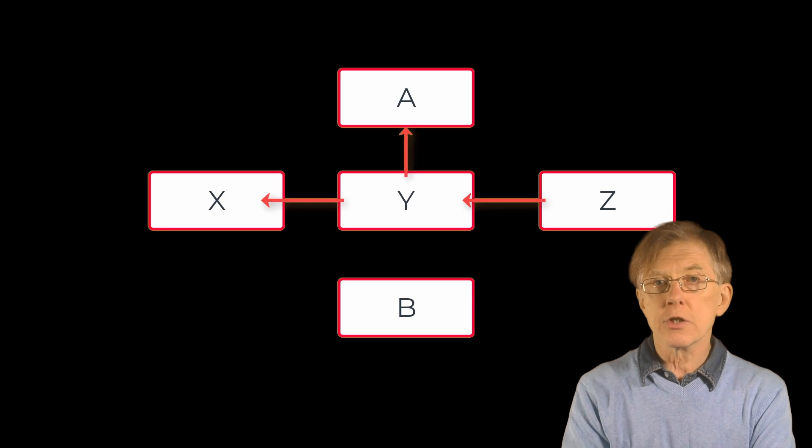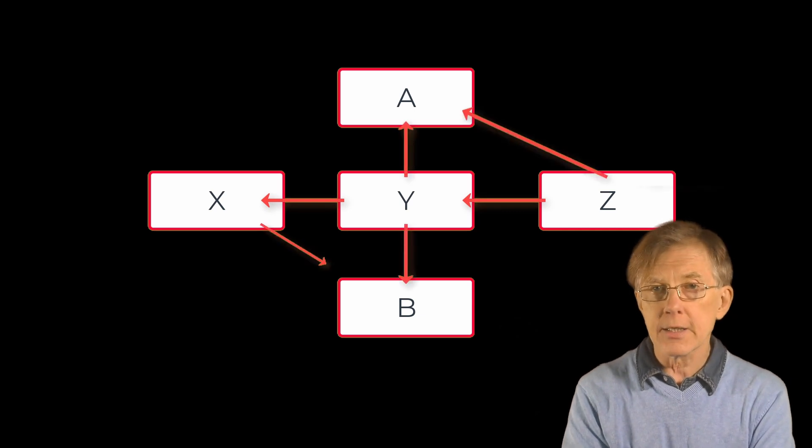Pointers can be used in quite complicated ways to create lists and branching or tree-like data structures where one pointer stores the address of another pointer, or you could say it points to another pointer. In programming books, arrows are often used to show pointers pointing to other pointers.